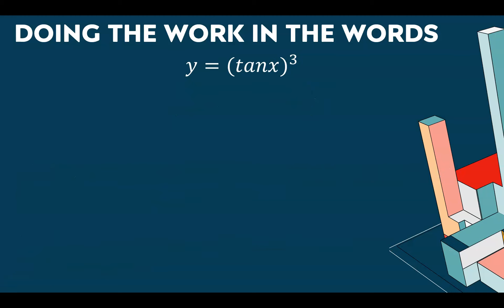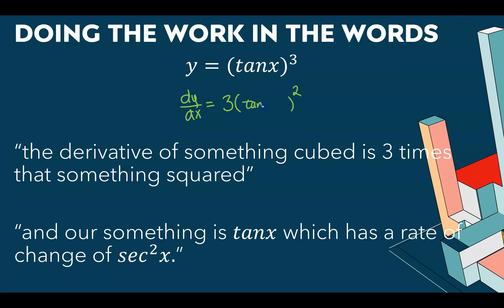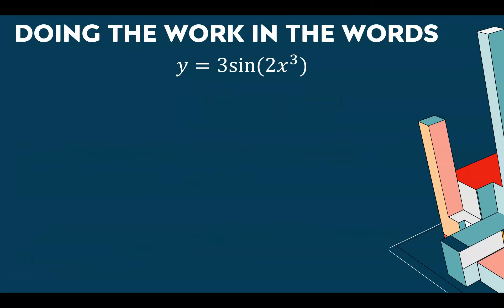Tangent of x all cubed: it's pretty obvious this is the derivative of something cubed. The derivative of something cubed is 3 times that same something squared. Our something is tangent of x. So I'm writing tangent of x as the input to the 3 times something squared part. And that something — tangent of x — has a rate of change of secant squared x.